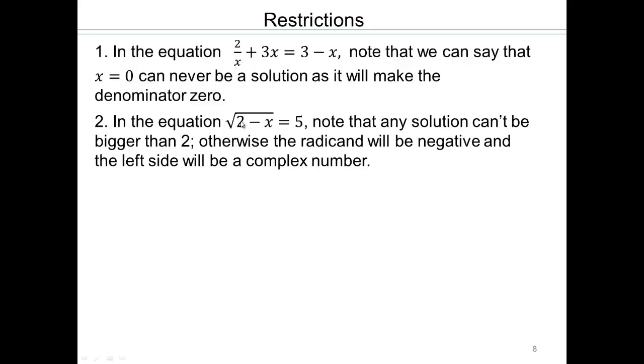That means that you cannot have x to be any number bigger than 2. For example, if you put 3 in for x, 2 minus 3 will give you negative 1 inside the square root, which will be an imaginary number. So the largest x can be is 2.